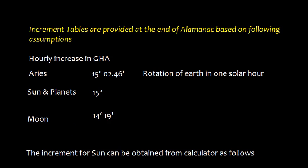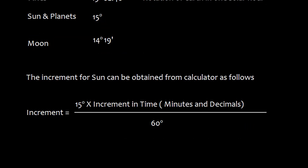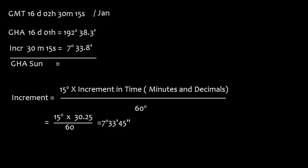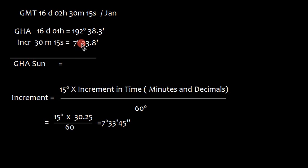Increment of sun can be obtained from the following calculation. The increment equals 15 degrees into time. You have to take minutes and decimal divided by 60. Suppose there is a GMT 16 day and 01 hour, we'll take this value and increment 30 minutes 15 seconds. We take this value 7 degrees 33.8 minutes and then we add together we find the GHA.